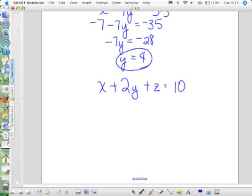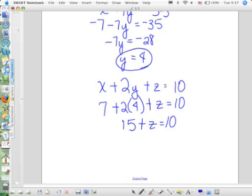What did we say? X is 7. Y is 4. That's 7 plus 14, which is 7 plus 8, 15 plus z equals 10. Subtract 15 from both sides. Z is negative 5.